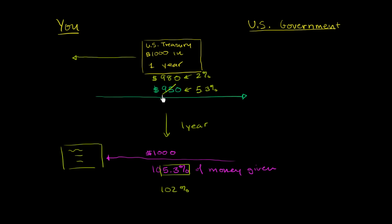And I'm doing this to show you a point. When the price of the treasury security goes up, as happened in this case, the yield, the interest that you're getting on your loan goes down. Because in either situation, you're going to just get $1,000 back. If you lend $980 and get $1,000 back, you're only getting 2% on your money. If you lend $950 and get $1,000 back, you get 5.3%. And so this is what people are talking about...